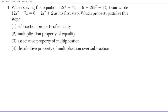Let's take a look at question 1. It reads: when solving the equation 12x squared minus 7x equals 6 minus 2 times the quantity x squared minus 1, Evan wrote 12x squared minus 7x equals 6 minus 2x squared plus 2 as his first step. Which property justifies this step?